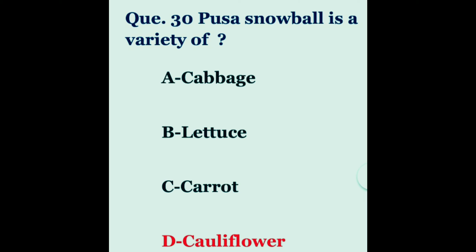Question 30. Pusa Snowball is a variety of? The options are cabbage, lettuce, carrot, or cauliflower. The correct answer is cauliflower.